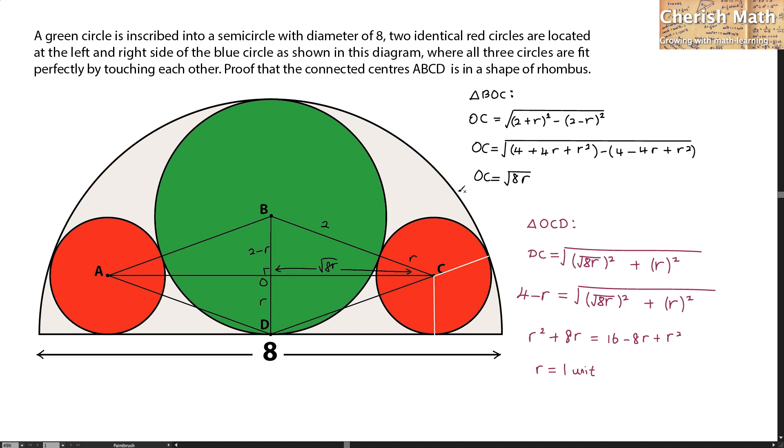Now, here is the final solution. By substituting the value of R as 1 unit into DC here, the value of DC that I get is 3 units. The same thing happens for BC, which I get by using 2 plus R. R is 1, so I get 3 units as well.